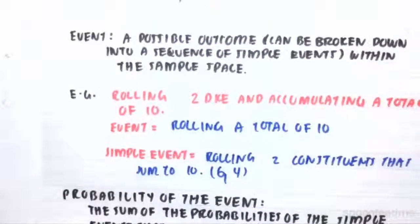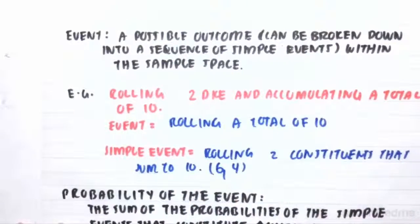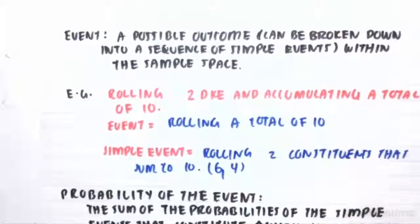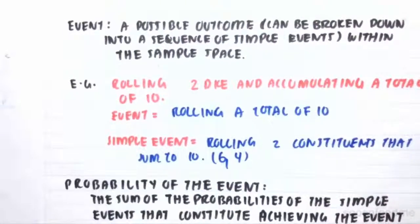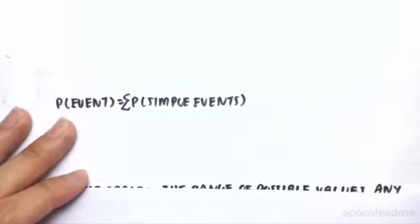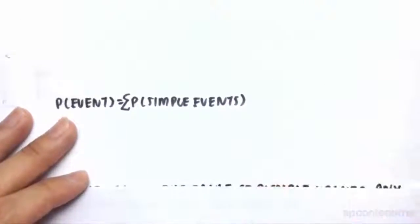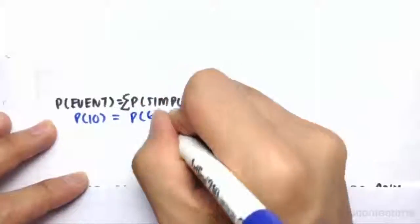Then we look at the probability of the actual event occurring. The sum of probabilities of the simple events that constitute achieving that event will be the probability of the event occurring. For example, rolling two dice and accumulating a total of 10 — the probability of the event equals the sum of the simple event probabilities. So the probability of 10 occurring equals the probability of rolling a six and then a four.